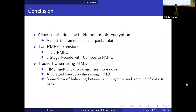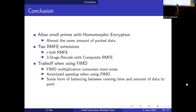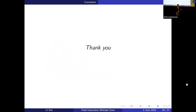In conclusion, we showed how to use small primes with homomorphic encryption while encoding almost as much data as large primes. We have two RMFE extensions: R4-RMFE and the three-stage recode for composite RMFEs. Trade-offs of FIMD include that FIMD multiplications consume more noise, but we get a better amortized speedup. There is also a balance needed between running time and how much data to pack. Thank you for listening.